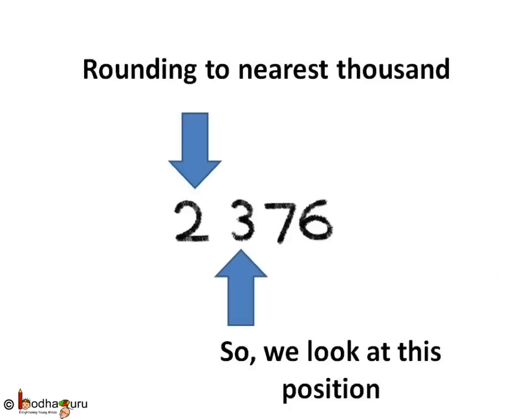Now let us try rounding to nearest 1000. So 2 is at 1000's place. And to its right, that is 100's place, is 3.